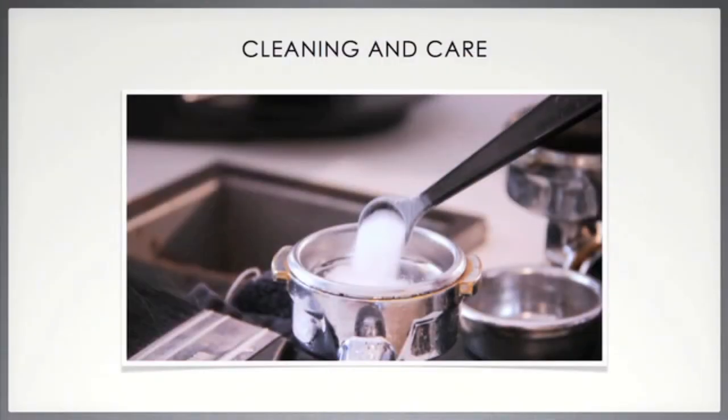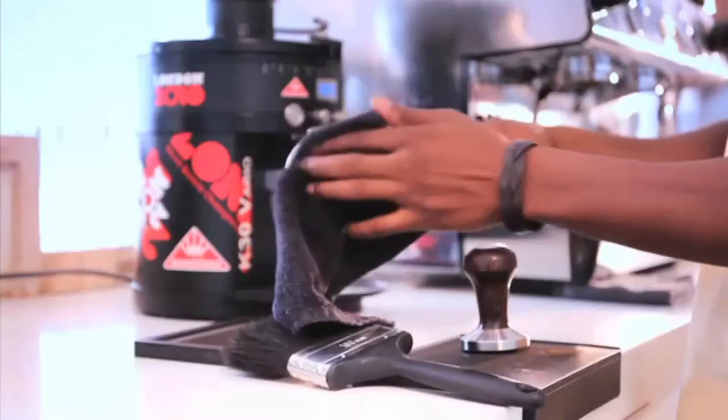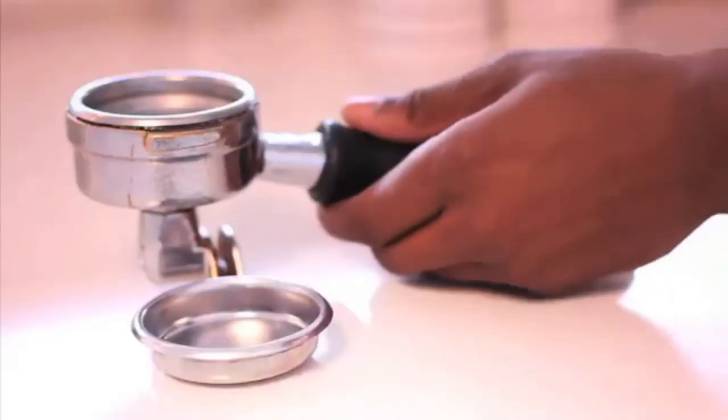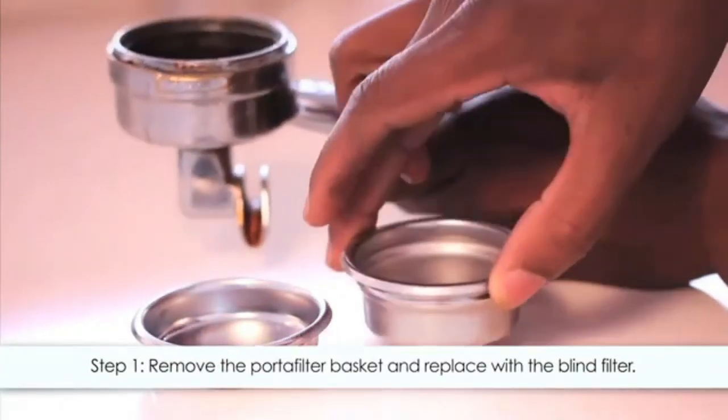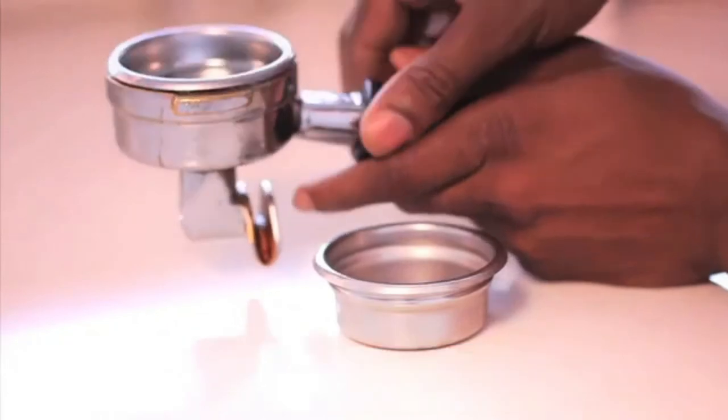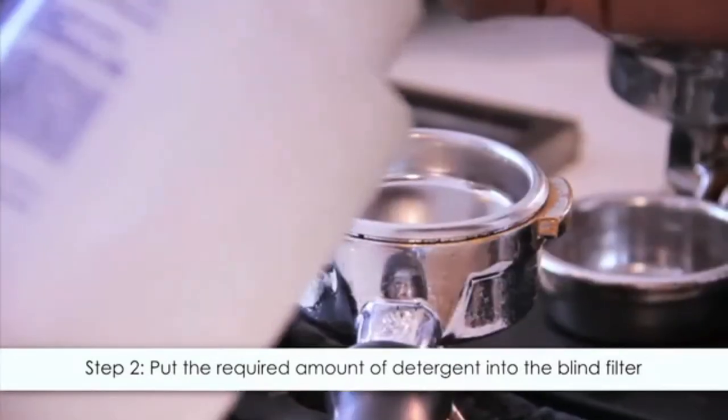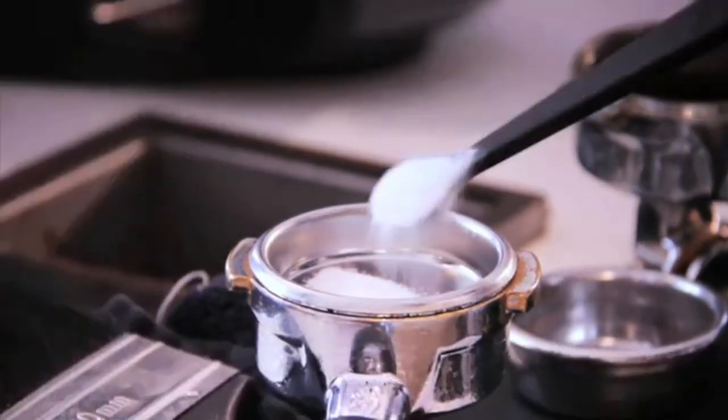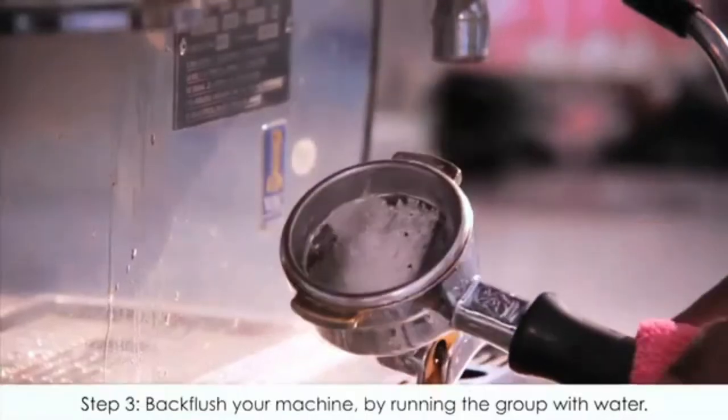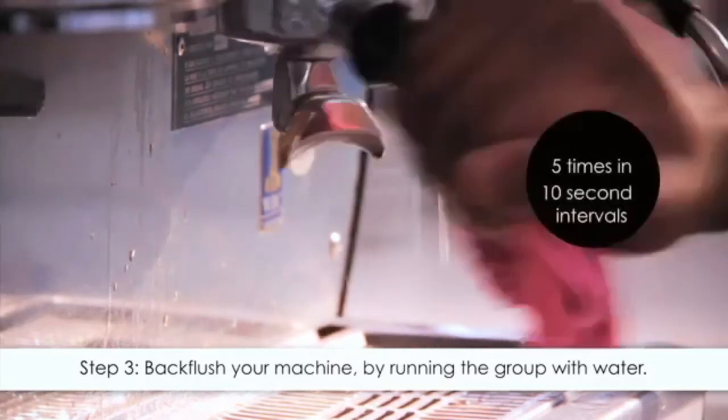Let's have a look at cleaning and care for the espresso machine. The purpose of cleaning your espresso equipment is to achieve better control of the brewing process and to obtain the best taste in coffee. Let's have a look at how we do this. Step one: remove the portafilter basket and replace with the blind filter. Step two: put the required amount of espresso machine detergent into the blind filter and secure the portafilter to the group head. Step three: with the portafilter attached, back flush your machine by running the group with water five times in 10 second start and stop intervals.